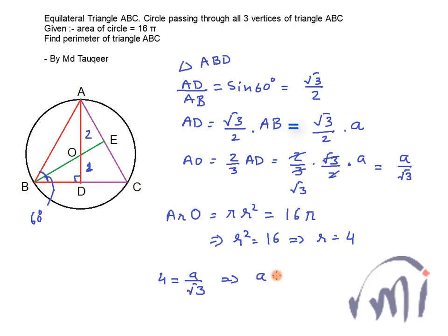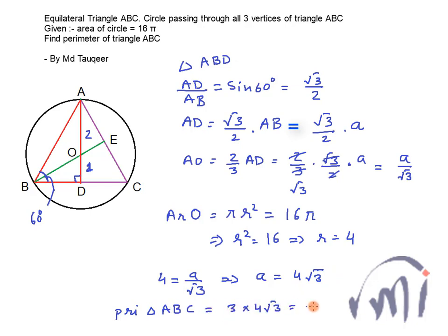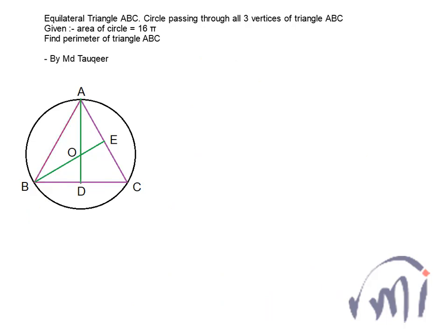From 4 = A/√3, we get A = 4√3. Since one side of the equilateral triangle is 4√3, the perimeter of triangle ABC is 3 × 4√3 = 12√3. That is the first way of solving this problem.